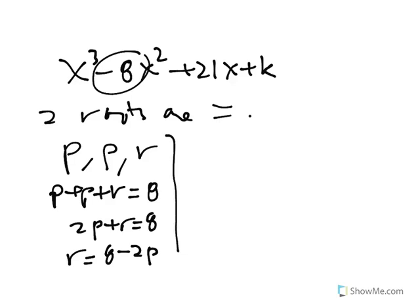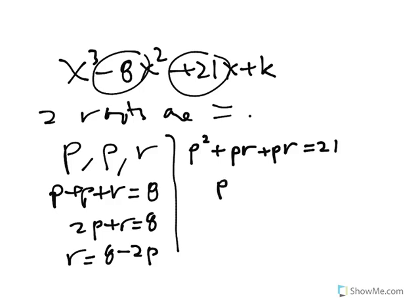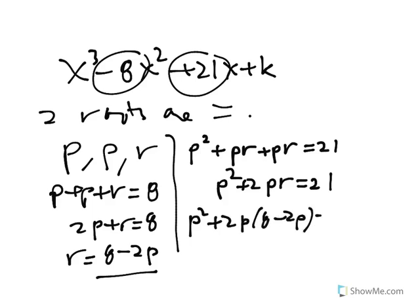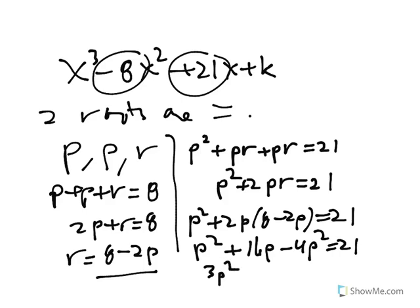This is actually a much harder question. The 21 is the sum of the roots taken two at a time, so p times p, plus p times r, plus the other p times r equals 21. In other words, p squared plus 2pr equals 21. Now we can replace r with 8 minus 2p, giving an equation with just p in it: 16p minus 4p squared equals 21.